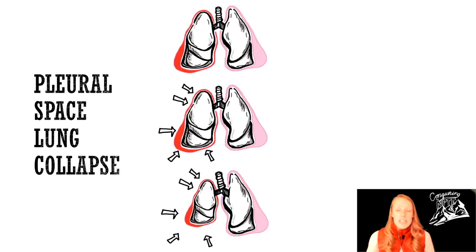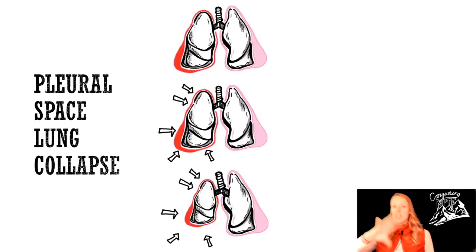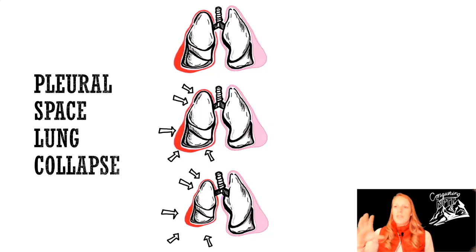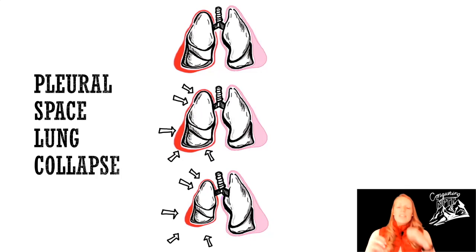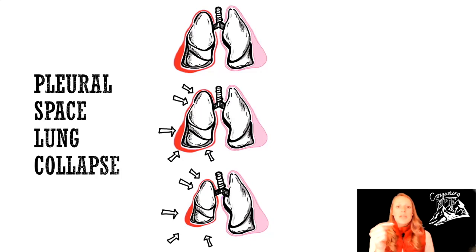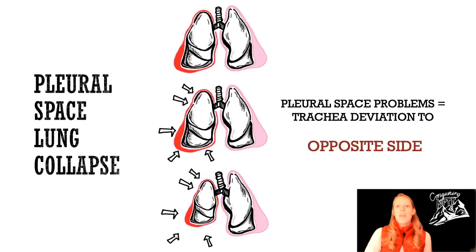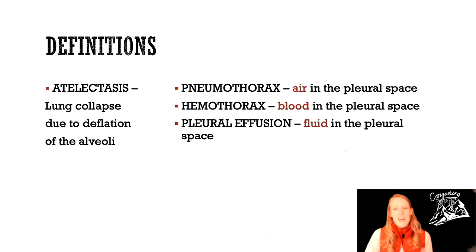Pleural problems usually result in lung collapse. If you've got something in that pleural space — which surrounds the lungs and shouldn't be there — it's going to put pressure from the outside in, almost like taking the lung in your hand and crushing it. That means with a pleural space problem, the trachea is going to deviate to the opposite side.